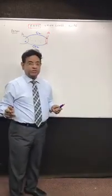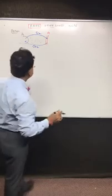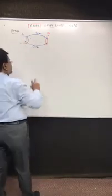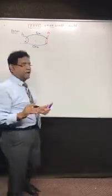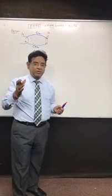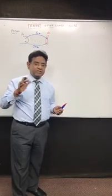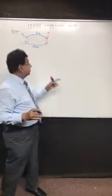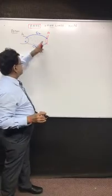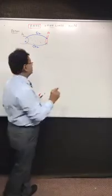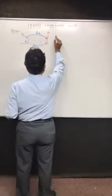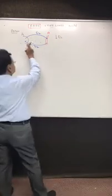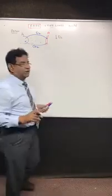Now, what will happen to the physiology? The oxygen, which has to go from the alveolus to the arteriole — we know that oxygen is a water-insoluble gas, so it cannot cross the fluid-filled interstitial. That leads to hypoxia.